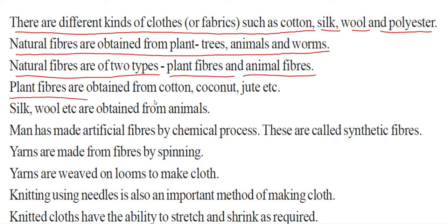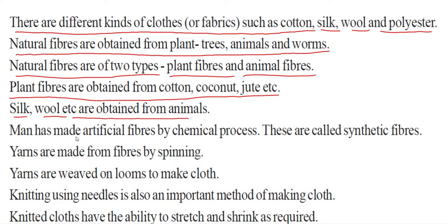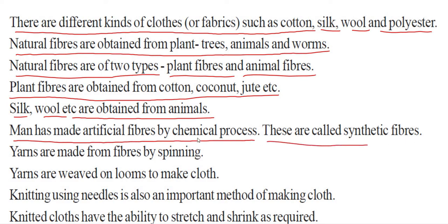Plant fibers are obtained from cotton, coconut, jute, etc. Silk and wool are obtained from animals. Man has also made artificial fibers by a chemical process, and these are called synthetic fibers.